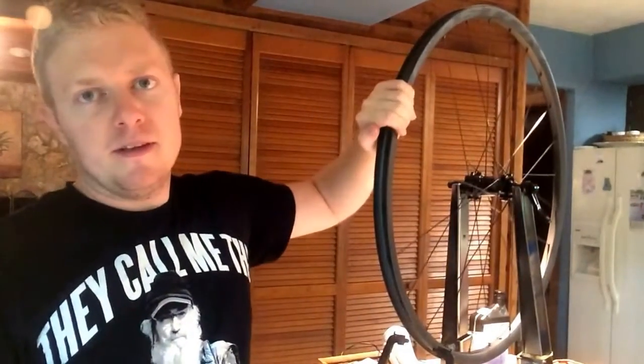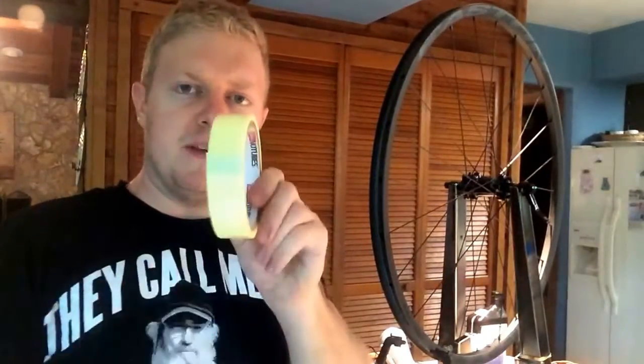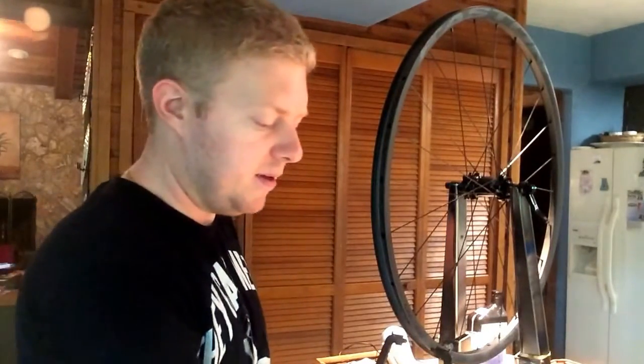First thing you need is a wheel without any tape that you want to make tubeless. Next thing, you need some Stans tape, this happens to be the Stans No-Tubes 25mm wide yellow tape, set of scissors to cut the tape, something sharp to poke a hole through the valve stem and you also need a tubeless ready valve stem.